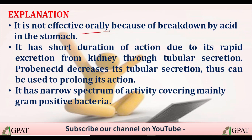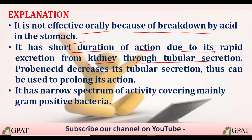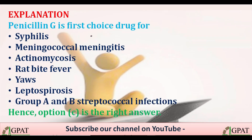Explanation: Penicillin G is not effective orally because of breakdown by acid in the stomach. It has a short duration of action due to rapid excretion from the kidney through tubular secretion. Probenecid decreases its tubular secretion, thus prolonging its action. It has narrow spectrum activity covering mainly gram-positive bacteria. Penicillin G is the first choice of drug for cephalic meningococcal meningitis, actinomycosis, rat bite fever, leptospirosis, and group A and B streptococcal infections.